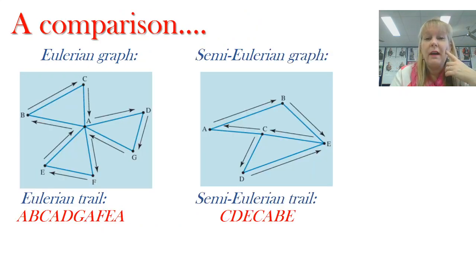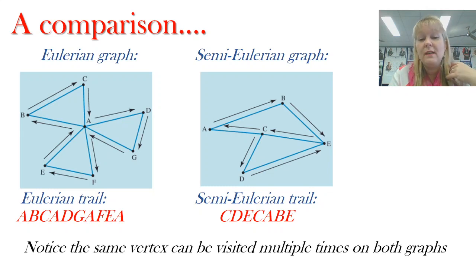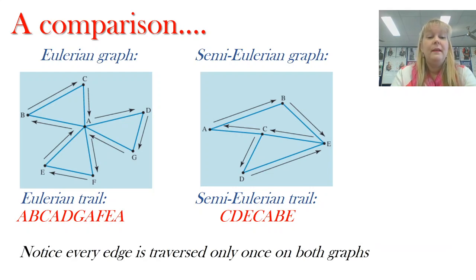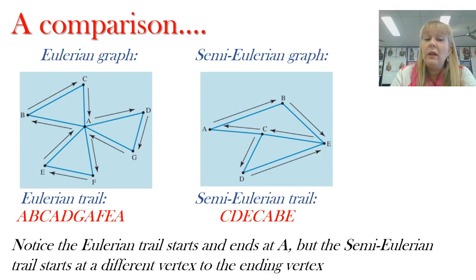So on the left here we've got an Eulerian graph and on the right we have a semi-Eulerian graph. The main difference here that you can notice is that we're both visiting our vertices multiple times. That's actually not a difference that's a similarity. So notice on the left graph we've been through A multiple times and on the graph on the right we're visiting the vertex C a couple of times there as well. So that's okay to do that. Also both graphs we're only visiting the edges once but every edge is being visited. So that's a very key distinction. We're not skipping any edges at all. And notice that the Eulerian trail is starting and finishing at A but the semi-Eulerian trail is finishing at a different vertex. It starts at C finishes at E. So that's the key difference between the two.